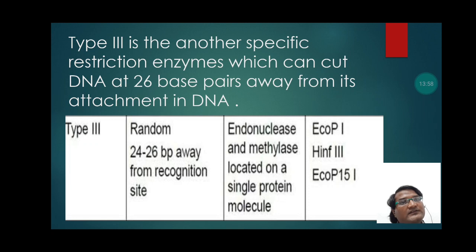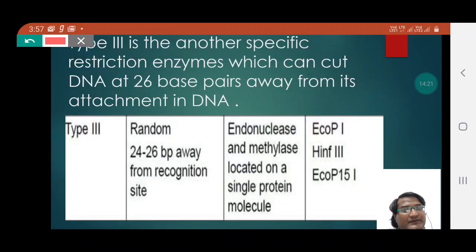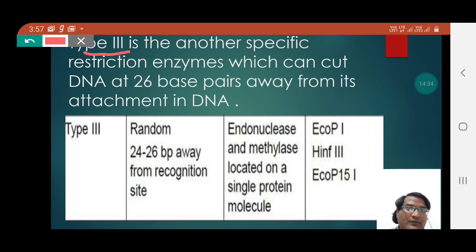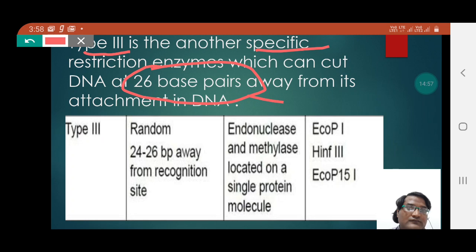Type 3 is another specific restriction enzyme which can cut DNA at 24 to 26 base pairs away from its attachment site. After understanding types 1 and 2, type 3 is easier to understand: it can cut DNA, but requires a minimum of 26 base pairs distance from its recognition site to make the cut.